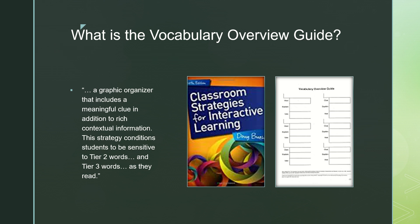Next, the students will read it again, paying close attention to the context surrounding the words. And then we will ask them to explain in terms of what they know or what they think they might know. What we want to do then is embed the words in class as much as possible, giving students the opportunity to see these words in action. And finally, we want to give students the opportunity to choose their own words to do this with.